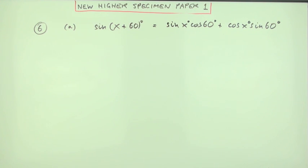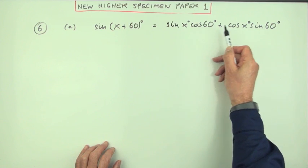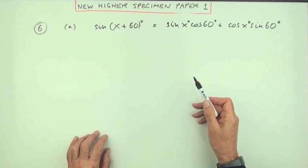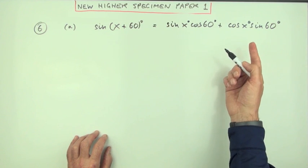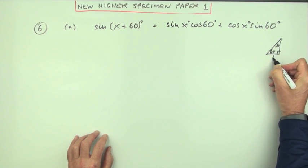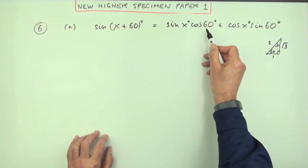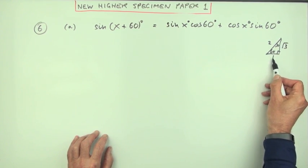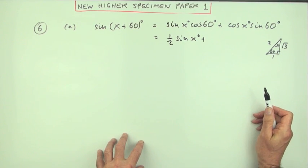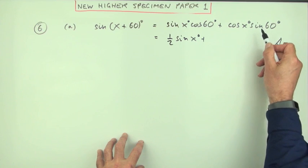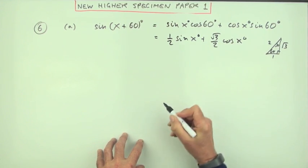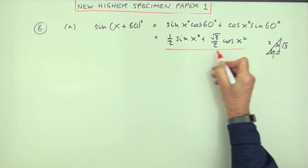Now is that all they want for the one mark? Because I would look at that and think those are actually numbers, those two parts can be evaluated. I'd be tempted to do that. With 60 degrees, that's that triangle from the previous question, the 60-30 triangle, the one-two-root three triangle. So the cos of 60°, being the adjacent side, is one half, so that would be a half sin x. And the sin of 60°, being the opposite side, is root three upon two, so plus root three upon two cos x. Is that what they want? Not sure how far to go with that one.